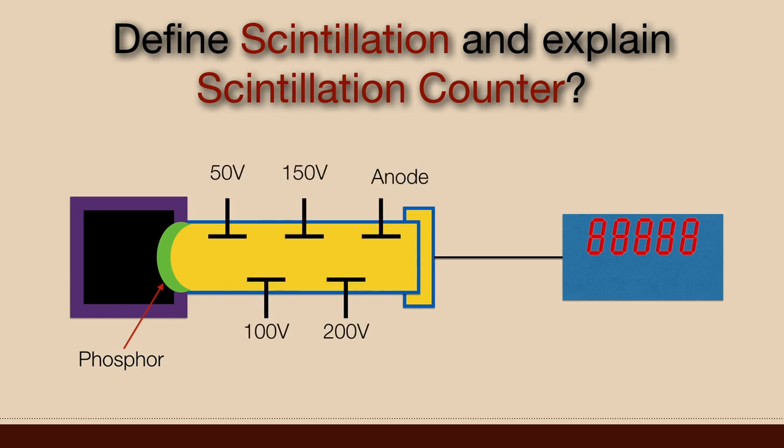PMT is photomultiplier tube. It works on the phenomena of secondary emission. It is long metallic tube. A sensitive photoanode is placed at one end of the tube and series of electrodes called dynodes are arranged in the tube.